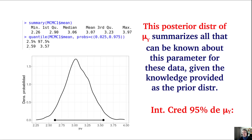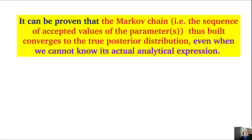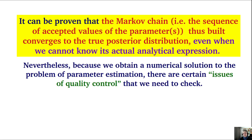This posterior distribution summarizes all that can be known about this parameter for these data given the prior distribution we provided. We can also compute credibility intervals: since this is a true probability distribution, we can state that the probability that mu is between 2.59 and 3.57 is exactly 0.95 — these are the 2.5 and 97.5 quantiles. It can be proven that the Markov chain converges to the true distribution even without knowing its analytical expression. Quality control checks will be the subject of the next video.